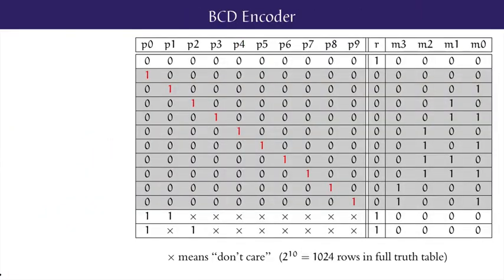Since the BCD encoder system has 10 inputs, a full truth table for the system has 2 to the power 10 equals 1024 rows. However, the output is only non-error with r equals 0 for only 10 out of 1024 of those rows, namely the ones shaded in grey, that correspond to exactly 1 out of 10 of the decimal digit inputs being active. In those 10 rows, the 4-bit output m is the 4-bit binary code of the decimal number i, for i ranging from 0 to 9.